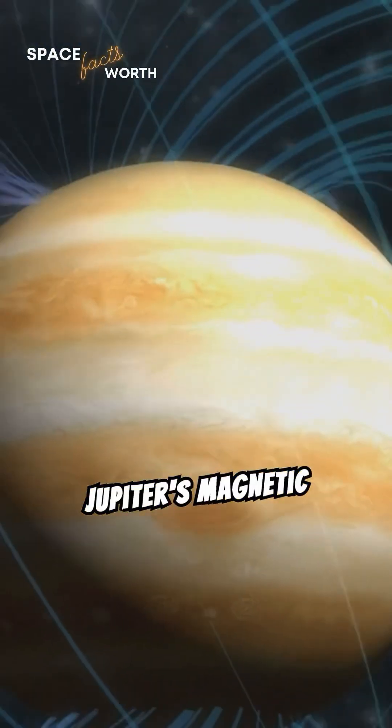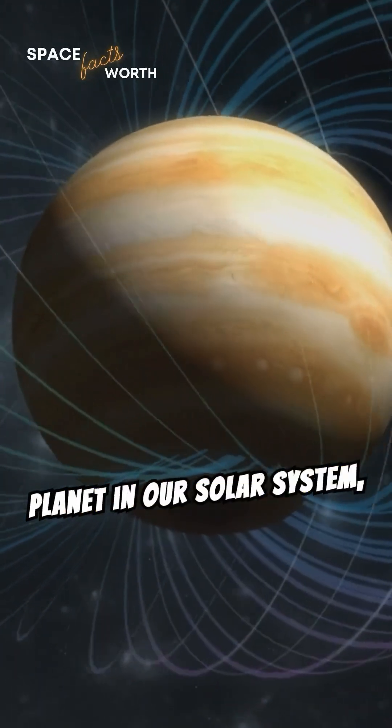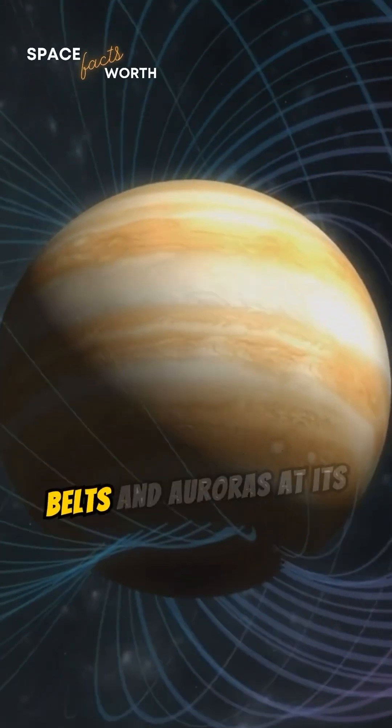Jupiter's magnetic field is the strongest of any planet in our solar system, producing intense radiation belts and auroras at its poles.